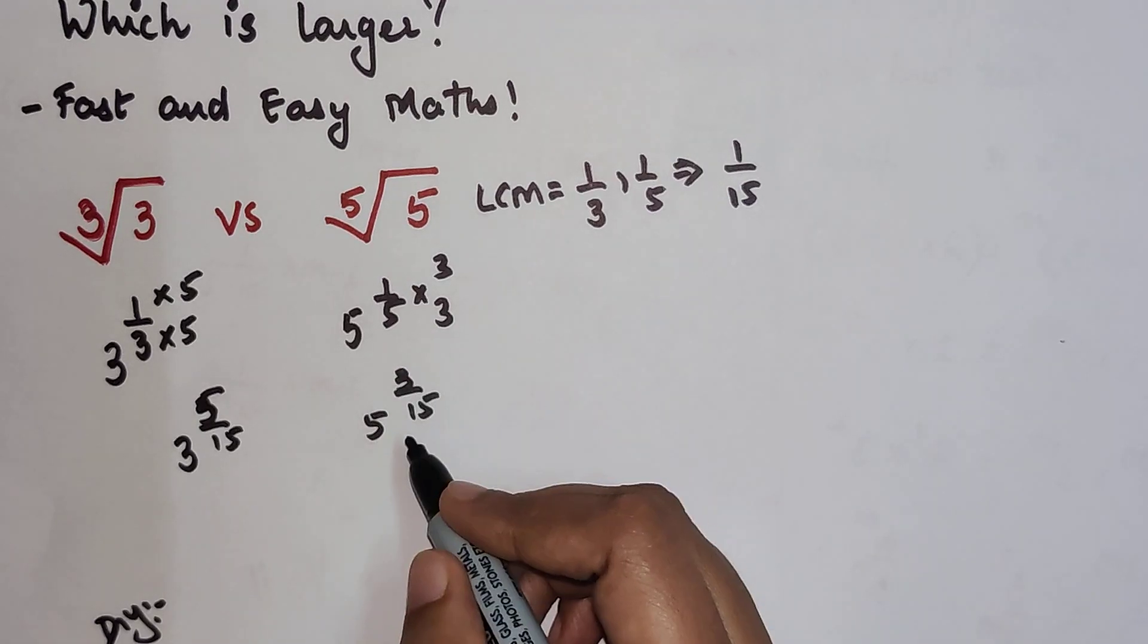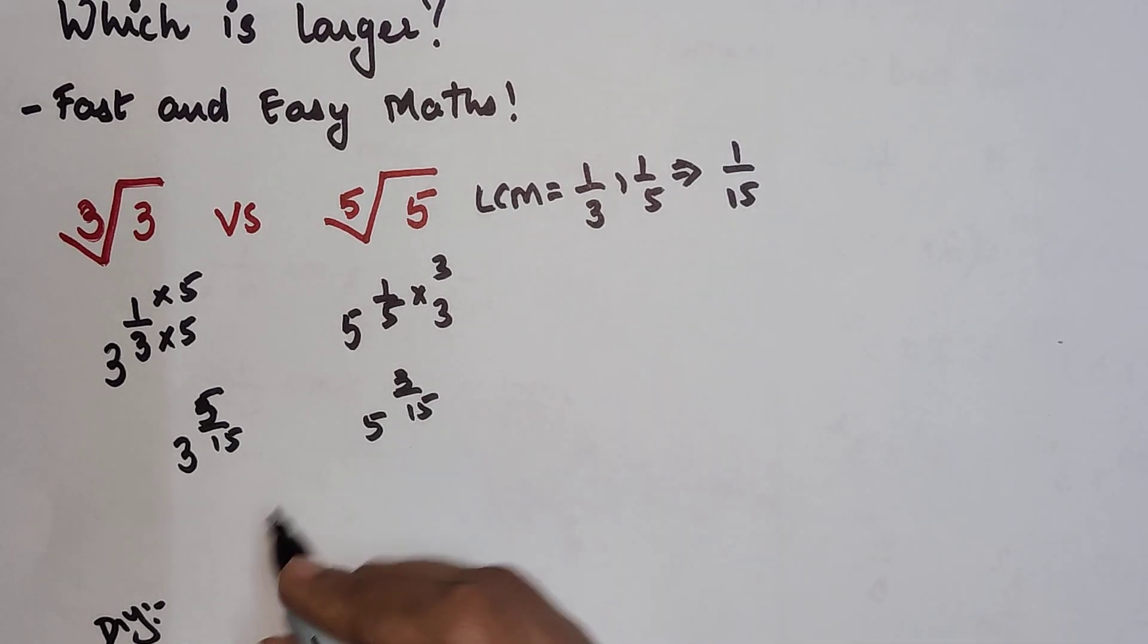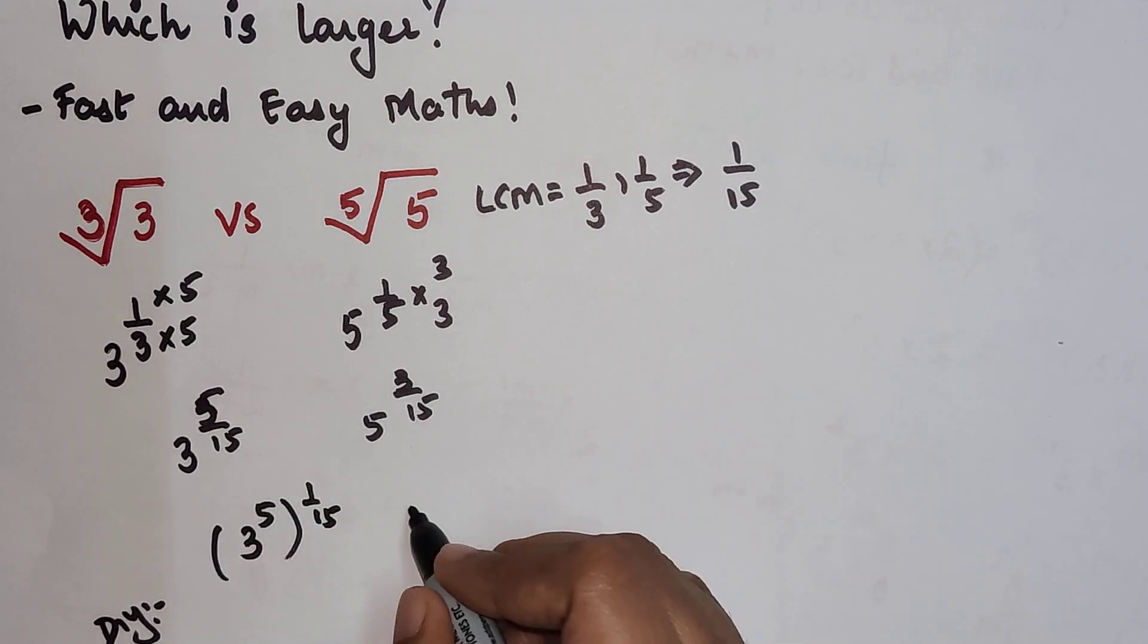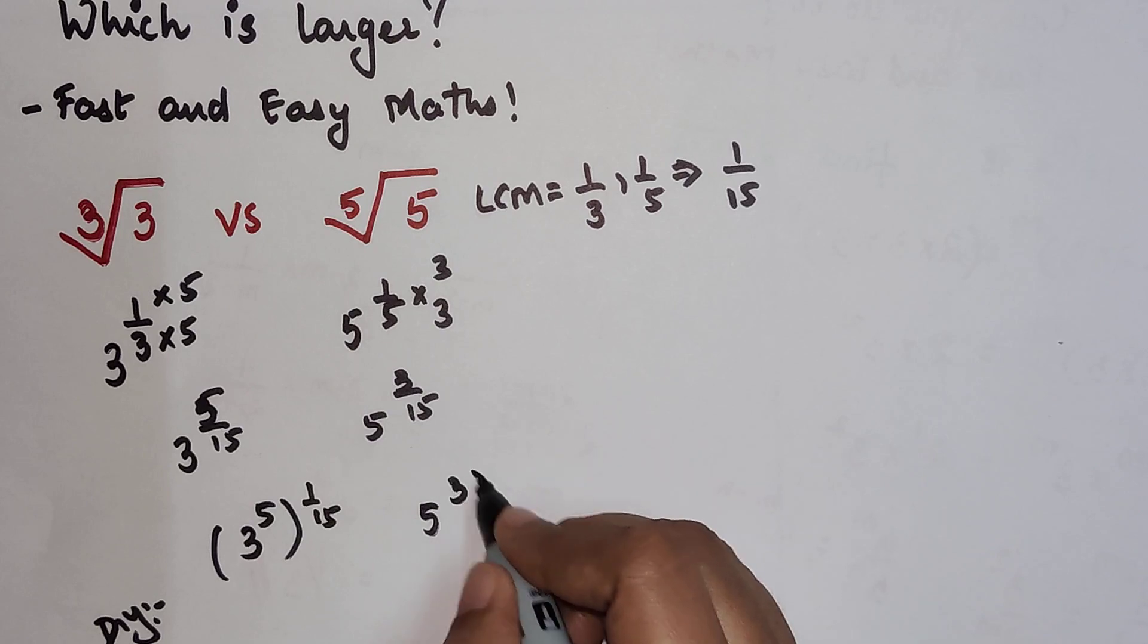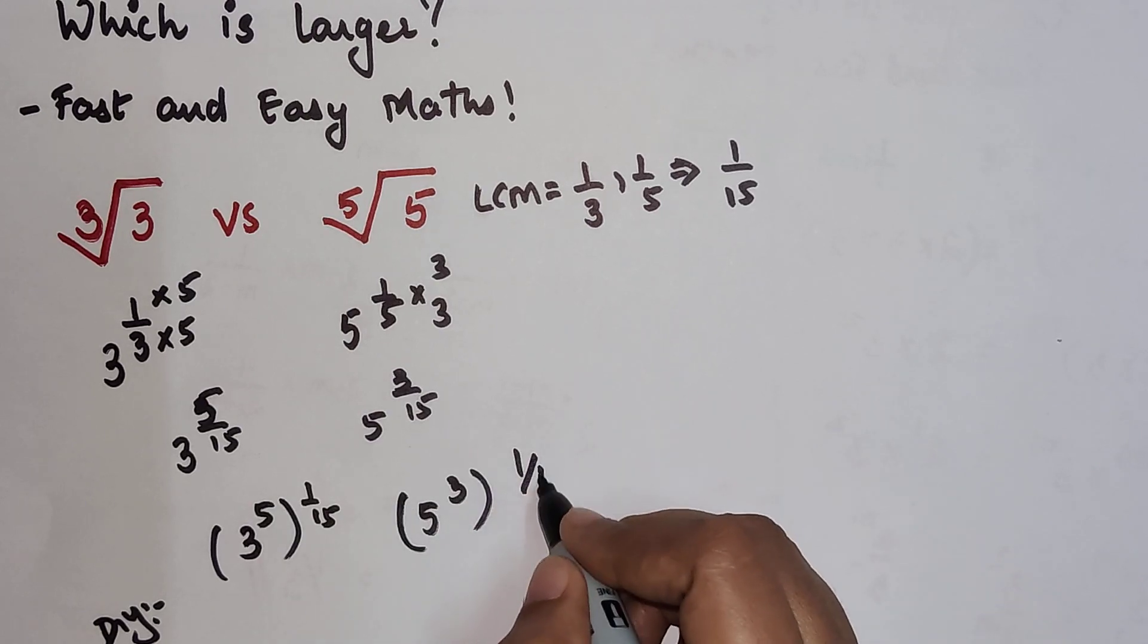Now the denominators are same. So basically I can write this as 3 raised to 5, the whole raised to 1 upon 15, and this is 5 raised to 3, the whole raised to 1 upon 15.